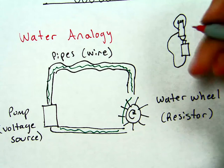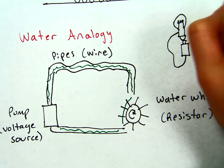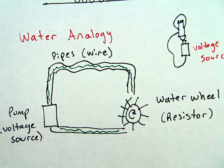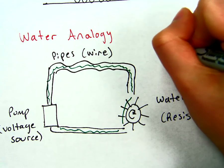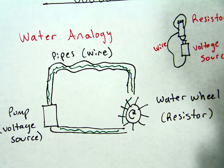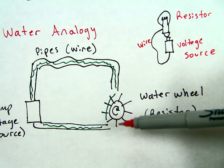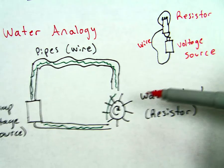It's the same idea. We've got a voltage source. We've got a wire. And we've got a resistor. So the circuit can be similar to this water analogy.